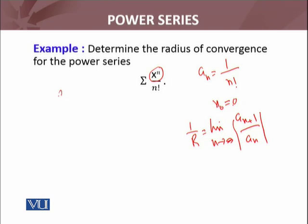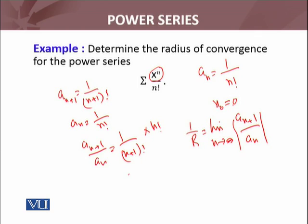So a_{n+1} will be 1 over (n+1) factorial and a_n will be 1 over n factorial. So this ratio a_{n+1} over a_n will be 1 over (n+1) factorial times n factorial, and it turns out to be 1 over (n+1).